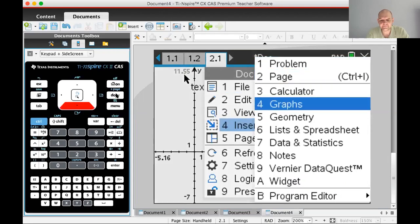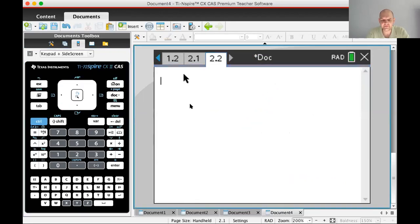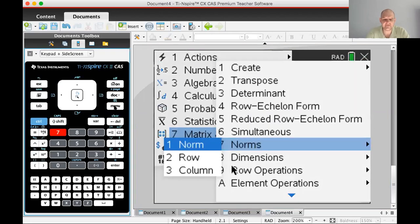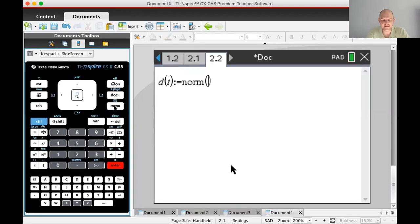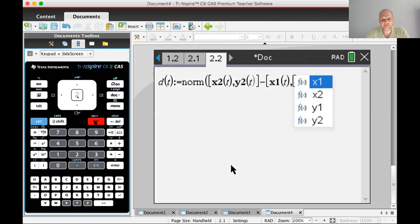Let's insert calculator page and let's create a distance formula. So distance as a function of t, I'm going to do the norm menu seven, seven of the vector. So vector x2 of t comma y2 of t and then minus x1 of t comma y1 of t. Okay.